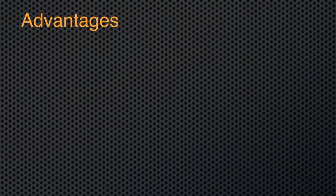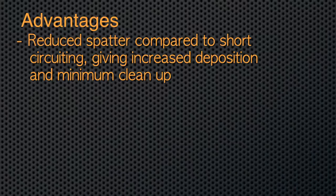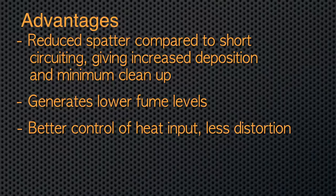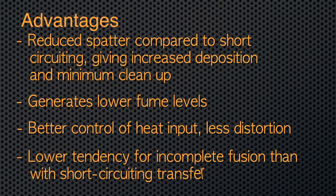Some of the advantages of the pulsed MIG process are: reduced spatter compared to short-circuiting, giving increased deposition and minimum cleanup; lower fume levels; better control of heat input, allowing less distortion; and lower tendency for incomplete fusion than with short-circuiting transfer. We'll be using a particular pulse gas metal arc power source and wire feeder.